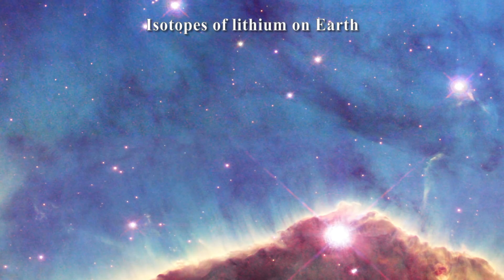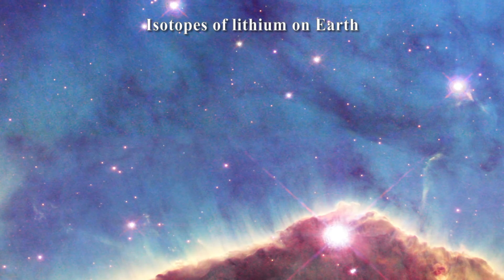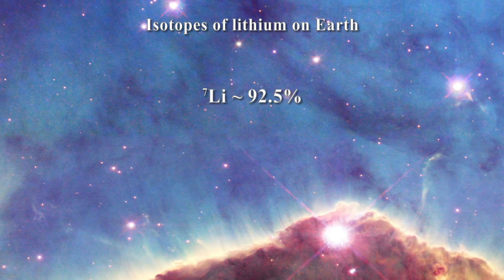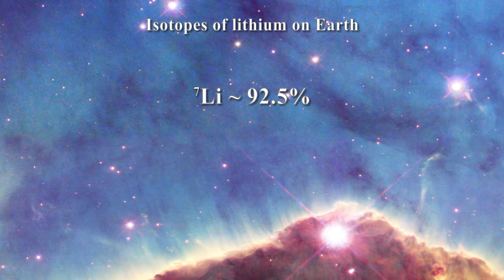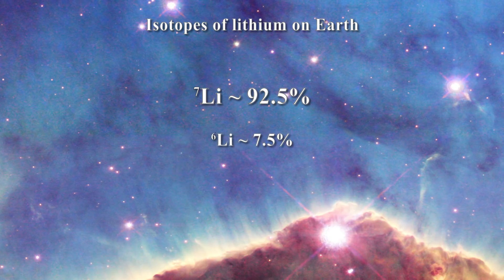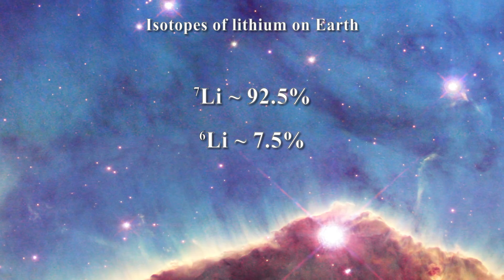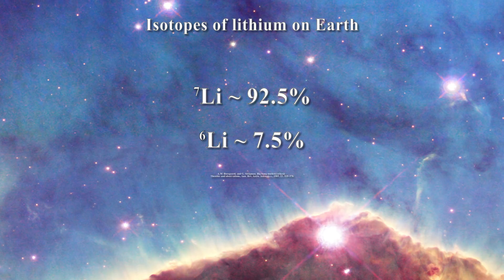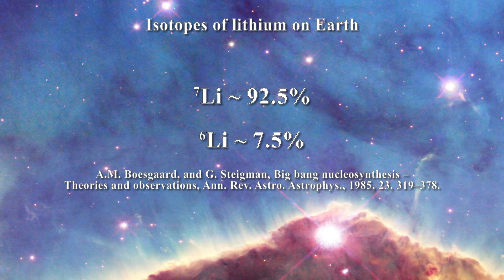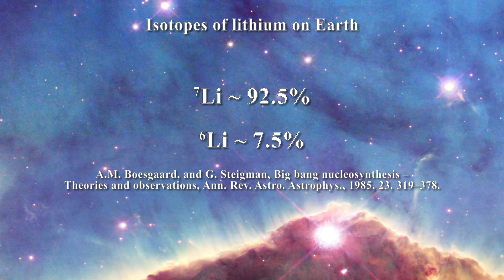On Earth there are two common isotopes of lithium. 92.5% of the element is lithium-7 and 7.5% is lithium-6. Initially astrophysicists tell us that both forms of lithium were made in the Big Bang, as seen in this paper. However, the claim that lithium-6 could be made in sufficient amounts in the Big Bang has now been challenged.